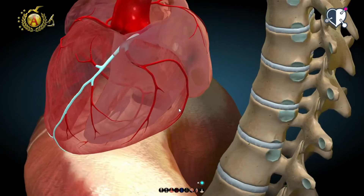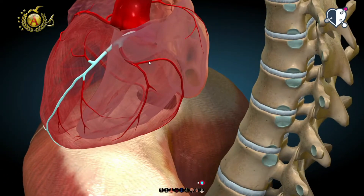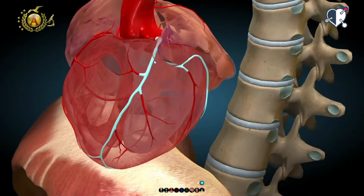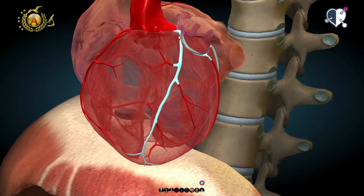and posteriorly into the circumflex branch. As the name suggests, the anterior interventricular branch flows into the anterior interventricular sulcus and vascularizes especially the anterior wall of the heart.